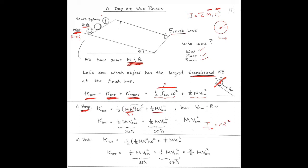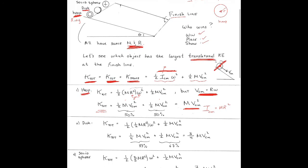Adding the translational kinetic energy of the center of mass, and using the rolling condition v_cm = Rω (so Rω = v_cm), I can substitute. The total kinetic energy comes out to one-half MV²_cm plus one-half MV²_cm, so the total kinetic energy of a rolling ring is MV²_cm. The kinetic energy is split 50-50: 50% wrapped up in rotation, 50% in translation.